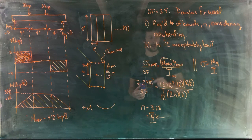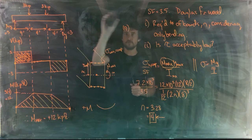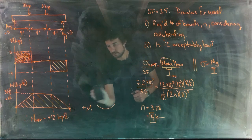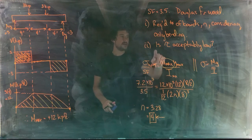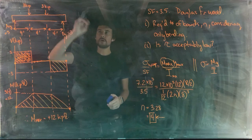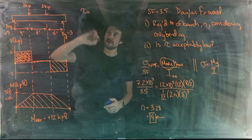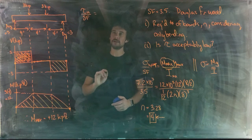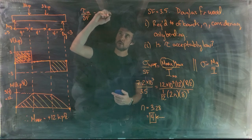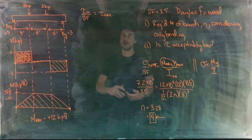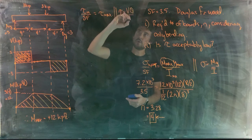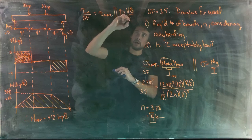Now for part two — the new material. We want to know if tau is acceptably low, so we compare the allowable shear stress to the maximum shear stress present within the beam using the equation tau = VQ / (It).